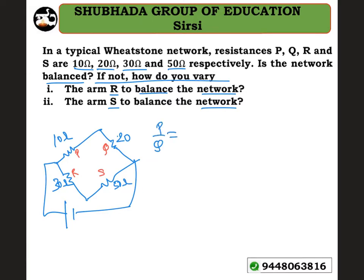The balance condition is P/Q = R/S. So P/Q = 10/20 and R/S = 30/50. Therefore, the bridge or network is not balanced.